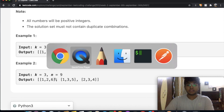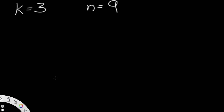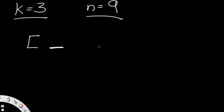So how can we actually go about and solve this question? I'm going to stick with the same example — k value of three and n equals nine. How can we come up with all the possibilities? We're going to iterate through all of the numbers. Since the k value is three, we have three possible slots to fill. We're going to use backtracking in order to do that.